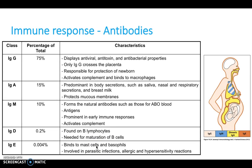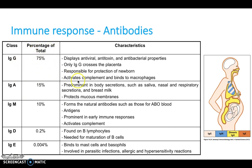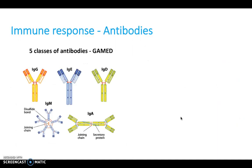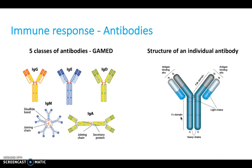Antibodies are also important to be aware of — it's a case of rote learning. Remember the GAMED analogy. The majority of antibodies are 75% IgG. Be aware of what each one does and particularly be aware that IgG is the only antibody that crosses the placenta from mother to fetus in pregnancy.